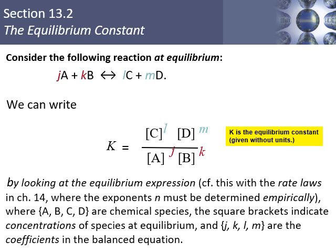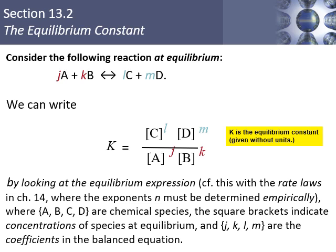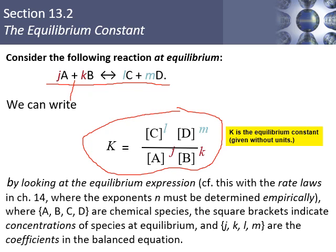For any equilibrium written as jA + kB ⇌ lC + mD, we write the equilibrium expression as K equals C to the l power times D to the m power, divided by A to the j power times B to the k power. Notice it's times, not plus, in both numerator and denominator.